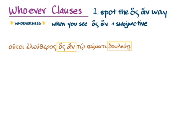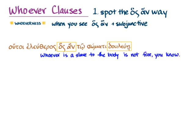There's a hoss-an and there's a subjunctive verb. And so we can translate this: 'whoever' — hoss-an — 'is a slave to the body' — and there's our subjunctive verb — 'is not free' — ou teletheros.